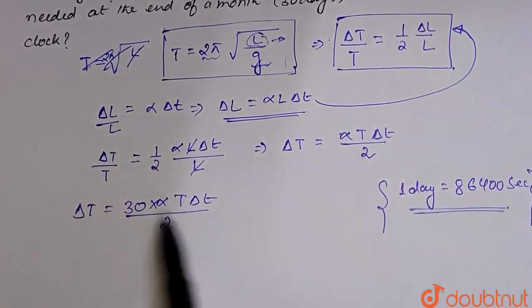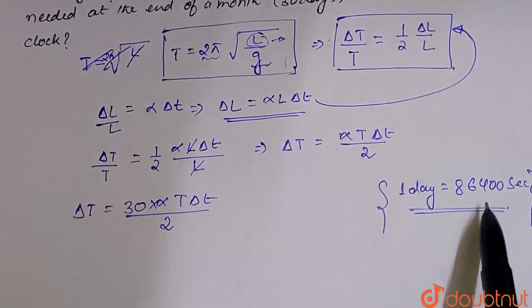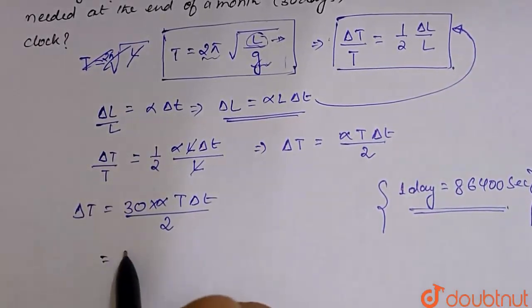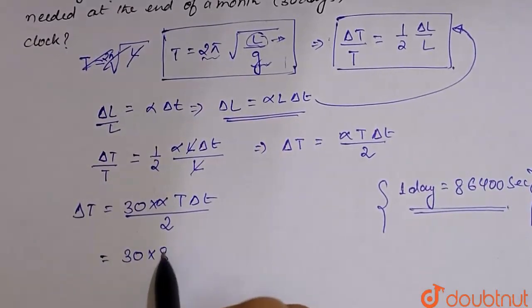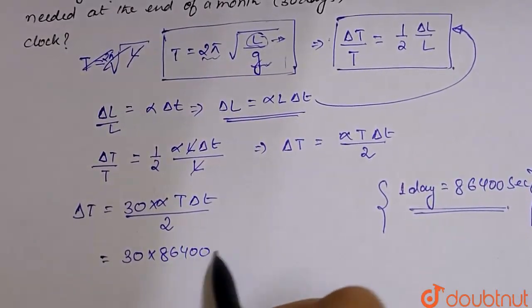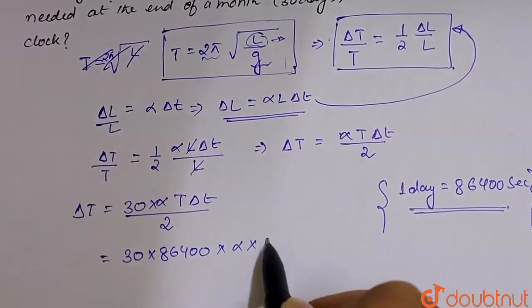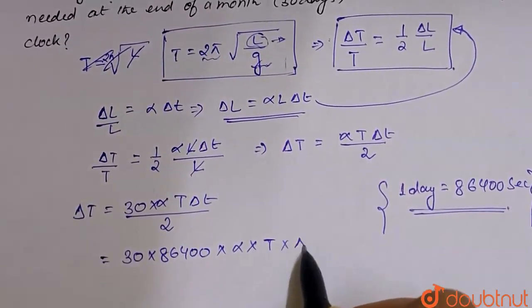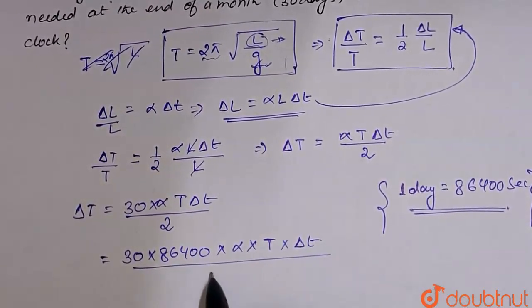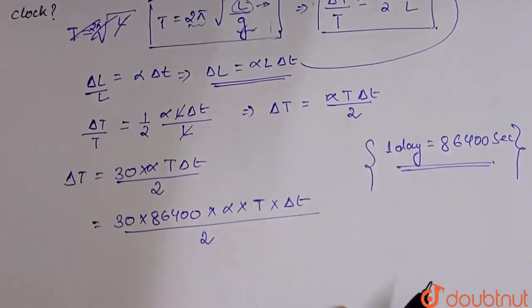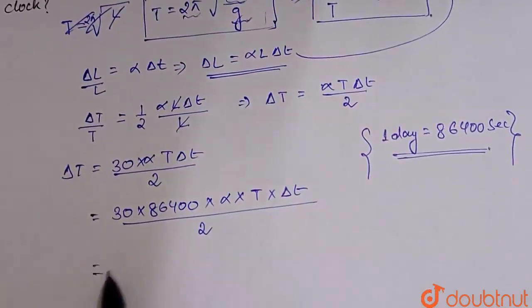So 30 times here multiply, that is 30 into 86400 seconds into alpha into time period into change in the temperature, whole divided by 2.